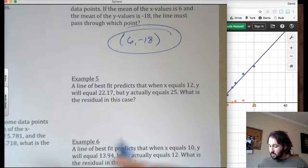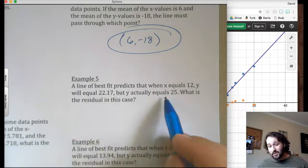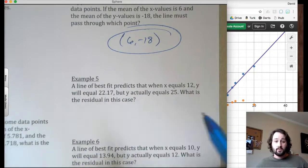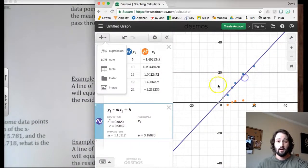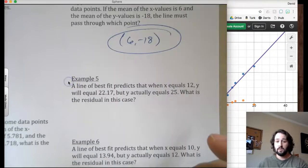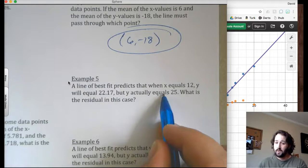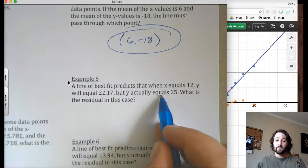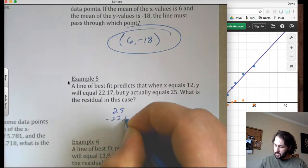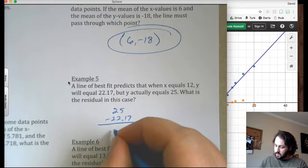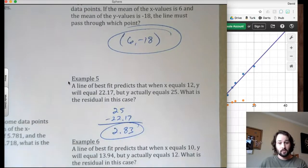Alright. Line of best fit predicts that when x equals 12, y will equal 22.17, but y actually equals 25. What is the residual in this case? So again, the residuals are how far off the line we are. So it's telling us it should have been 22.17, but it's actually 25. So the 25 is above 22.17. So if we do 25 minus 22.17, that will get us 2.83. That is my residual.